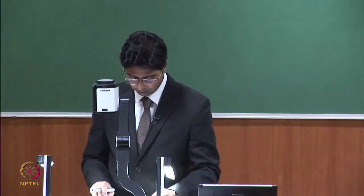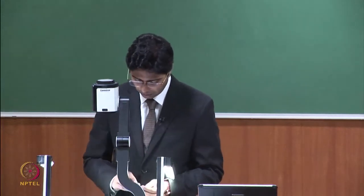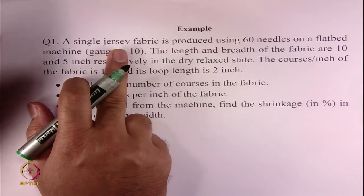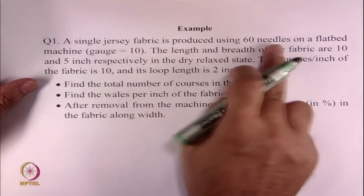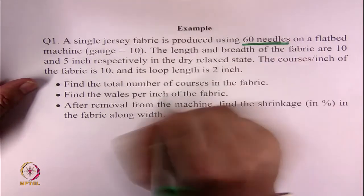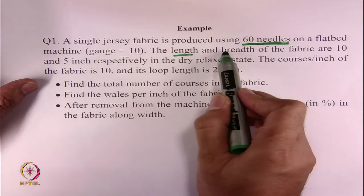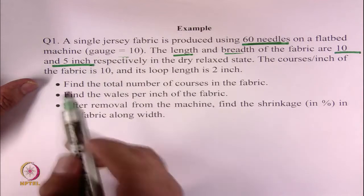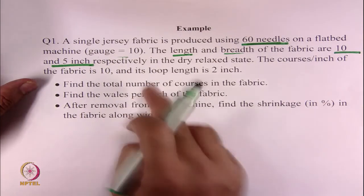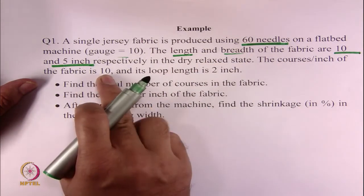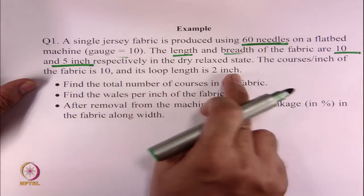Let's look at another simple example for your clarity. Here we will be finding out how many courses and how many wales are there in the fabric, and what is the shrinkage. A single jersey fabric is produced using 60 needles on a flatbed machine. The gauge is 10. The length and breadth of the fabric are 10 and 5 inches respectively in dry relaxed state. The courses per inch of the fabric is 10, and its loop length is 2 inches.